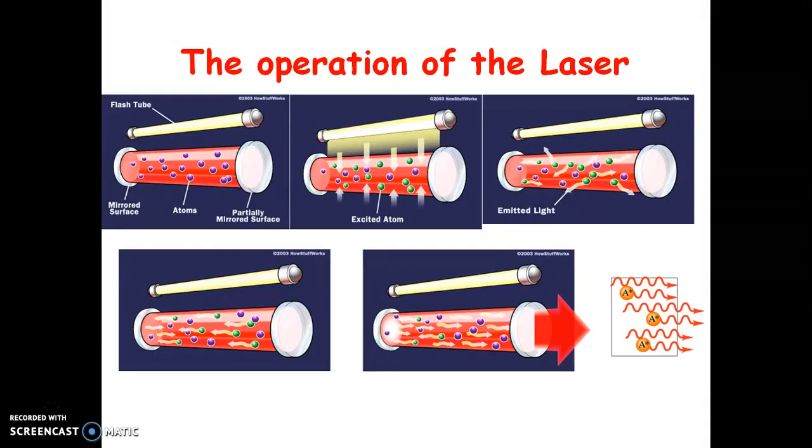Now let's see the first laser, that is ruby laser. Ruby is the crystal of aluminum oxide doped with chromium oxide by 0.05%. These chromium ions are active ions, that means laser action is possible for chromium ions itself. The chromium atoms can be excited by a flash tube. When a flash tube is incident light on this ruby crystal, chromium atoms get excited by absorbing energy in 4000 to 6000 angstroms. So blue and green region is absorbed by the chromium ions. These ions will remain in the excited state for 10 to the minus 8 seconds.